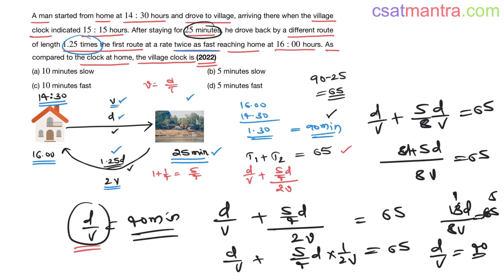If you see, D by V is actually T1, time taken to reach village. Reach village, that is 40 minutes. So 14:30 plus 40, that would be 15:10 hours, 15 hours 10 minutes. But 15 hours 15 minutes.